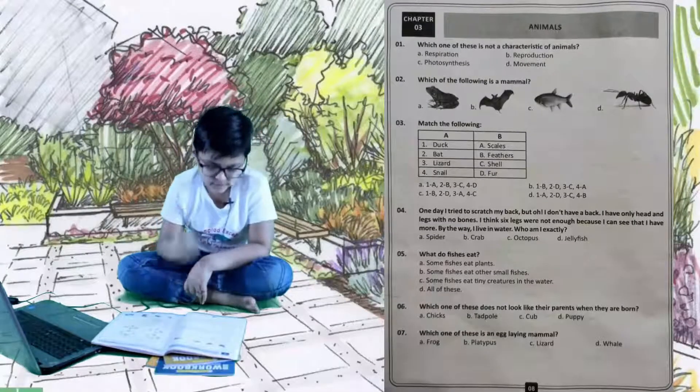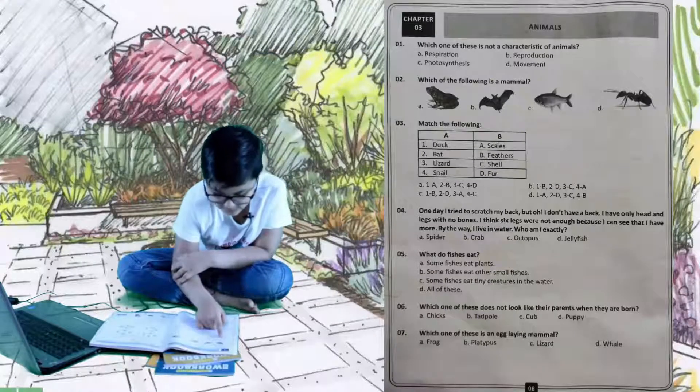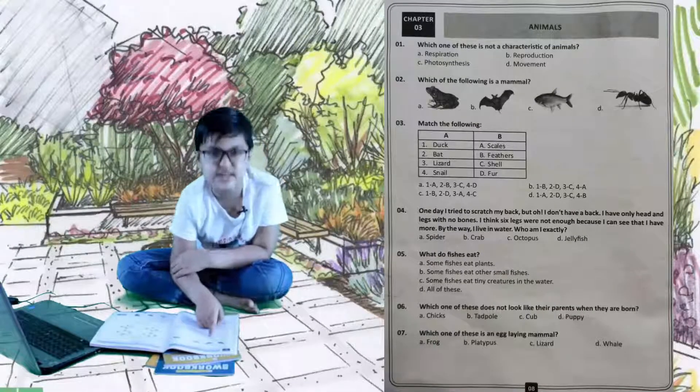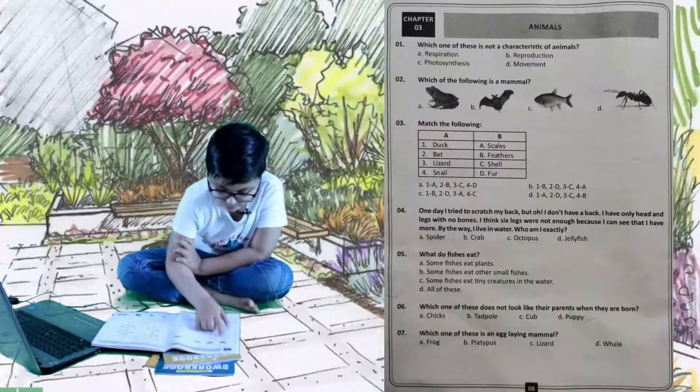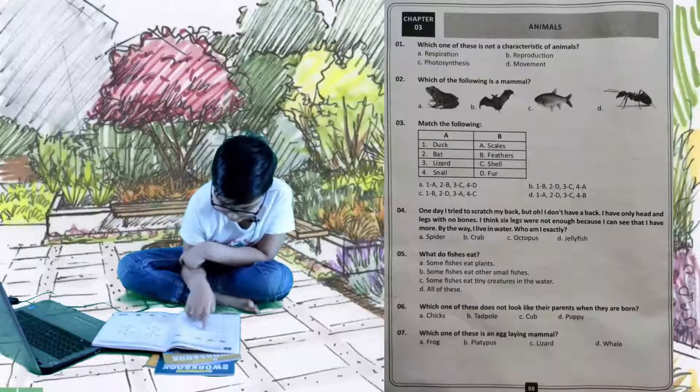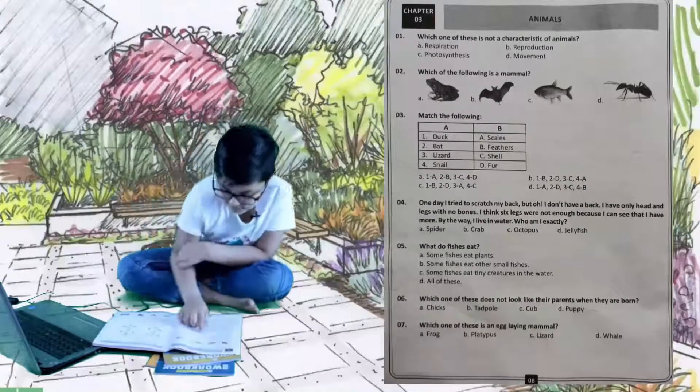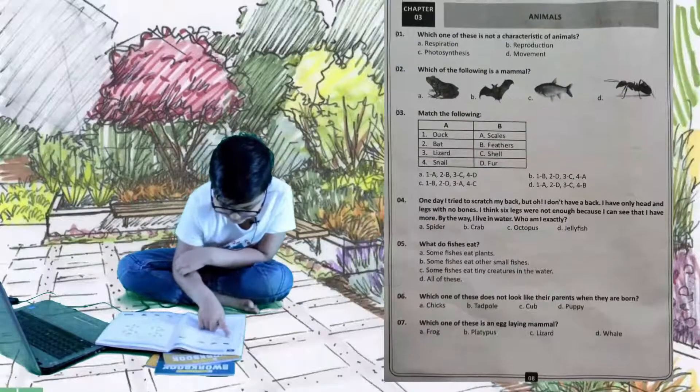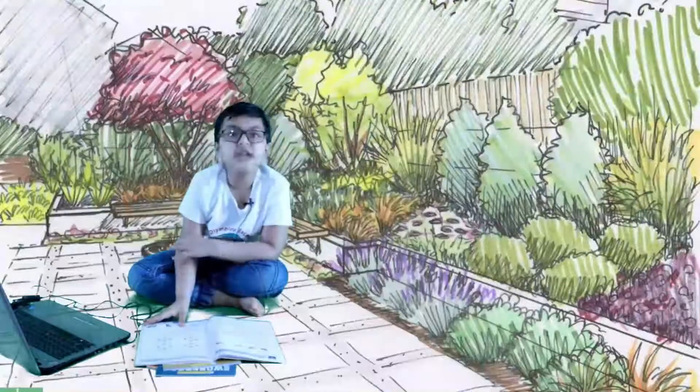Let's go to the third question, match the following. We have to match the following: duck has feathers so 1 to B, and 2 to D, 3 to A, and 4 to C. Let's see what we have done. We have matched duck to feathers, bat to fur, lizards to scales, and snail to shell. The right answer is C because it's in the right scale.